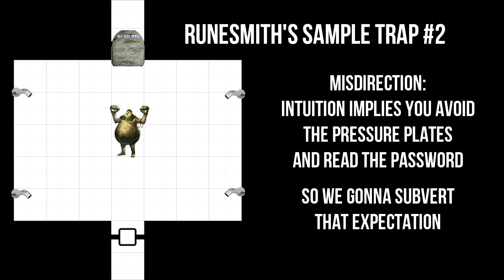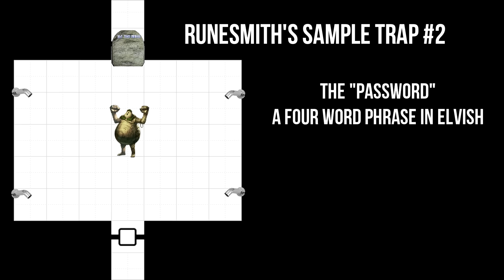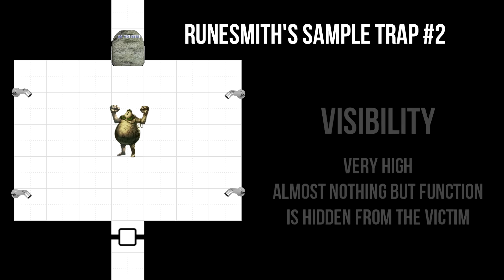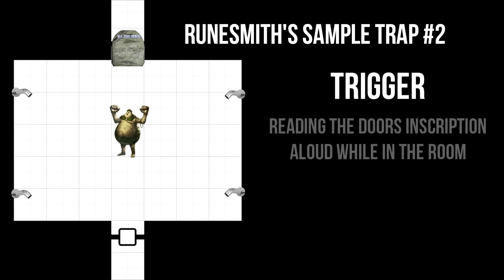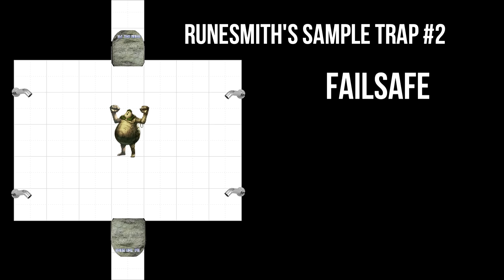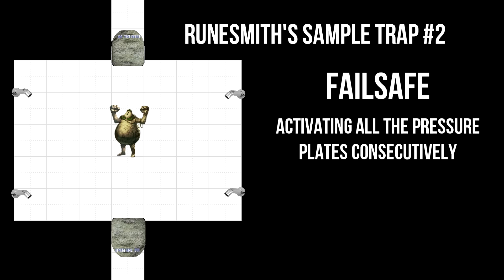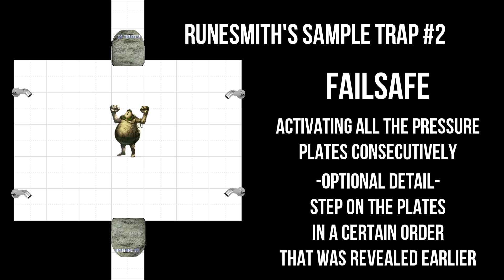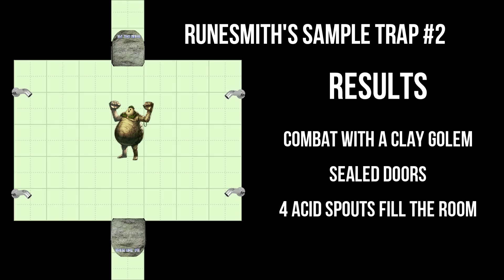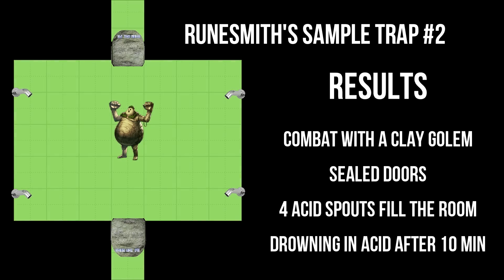An arcana check or otherwise even proves the inscription is magical. We'll make it in Elvish, a semi-common language, and have it be four words: 'Let me inside, bitch.' For visibility, the cards are all on the table — the ambiguity of magic greatly aids the trap even if you know what school it is. The trigger, as you've figured out, is to read the inscription; it's actually a command word to activate the golem as well as the spouts. The failsafe is to step on every pressure plate — you can also add a required order with small inscriptions on the stone or something earlier in the dungeon. The result of activating the trigger is an awakened clay golem, and the spouts begin to fill the room with acid, similar to create or destroy water. The acid fully fills the chamber in 10 minutes and then promptly drains — and they also reinvigorate the golem because of acid absorption and because fuck you.